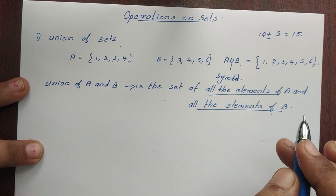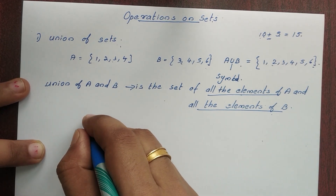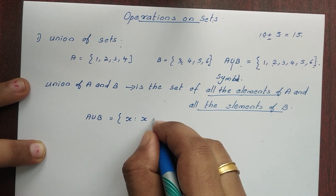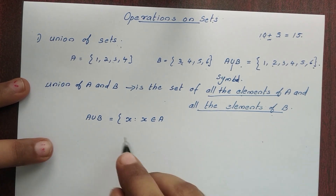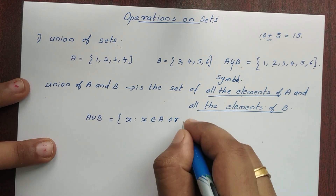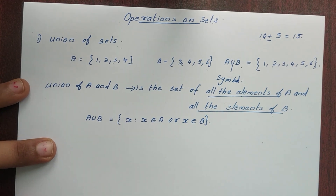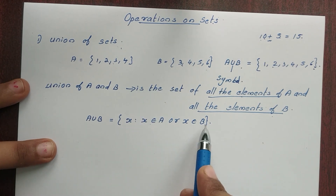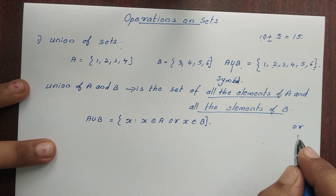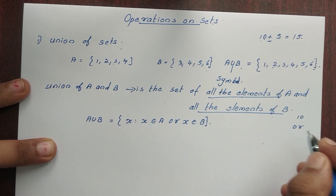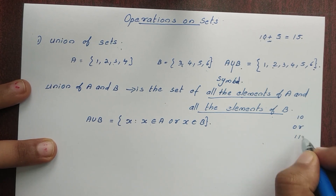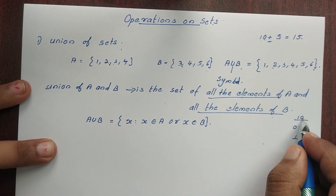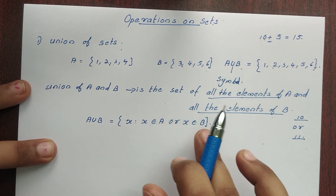We will represent it with a symbol and set builder formula. A union B is equal to the set of all x such that x belongs to A or x belongs to B. Now, you will learn this concept. If you have a question, you will answer: x belongs to A and x belongs to B — we will take these two sets.